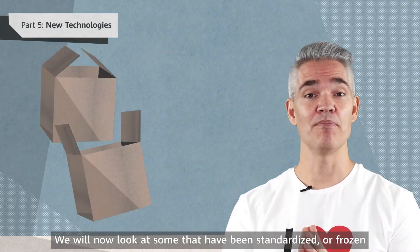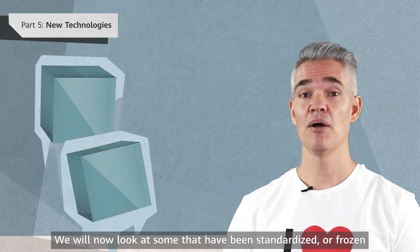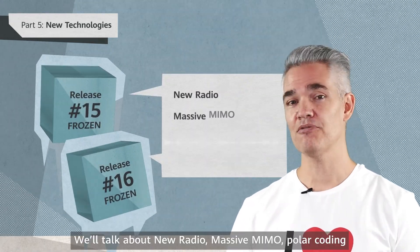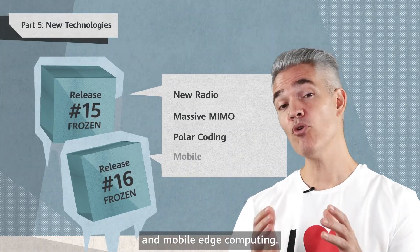We'll now look at some that have been standardized or frozen by 3GPP release 15 and 16. We'll talk about new radio, massive MIMO, polar coding, and mobile edge computing.